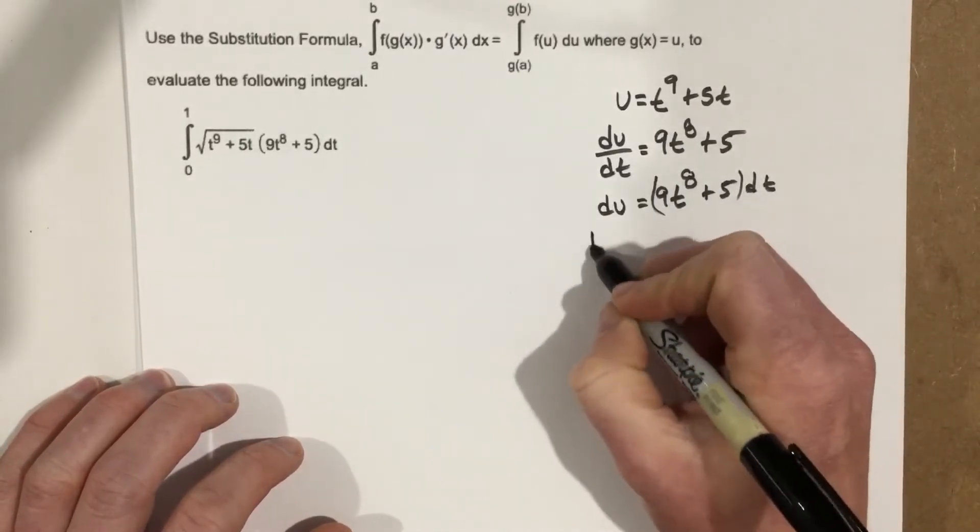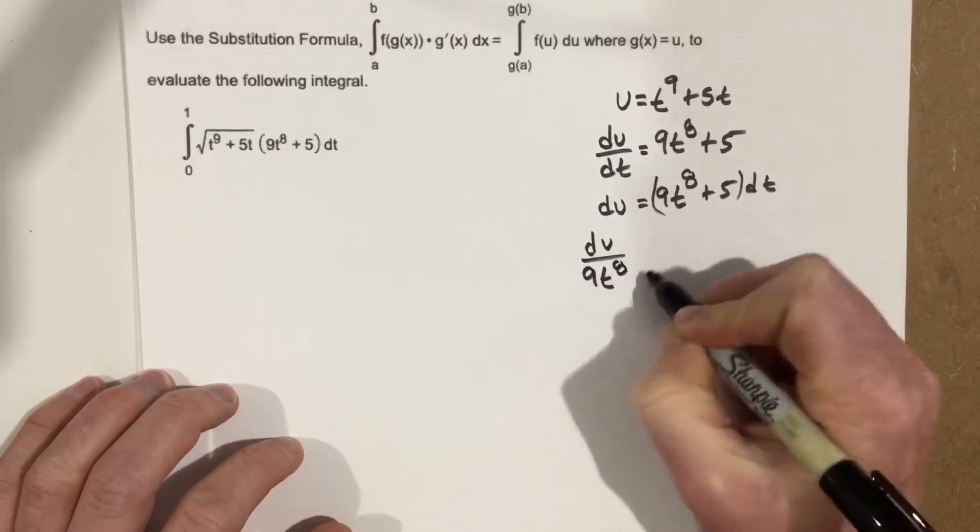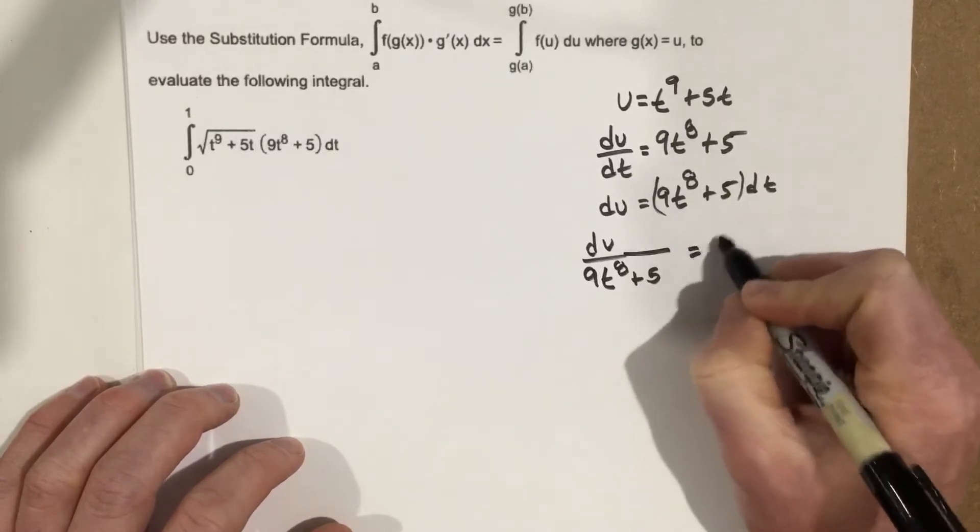And divide it across, you get du over 9t to the 8th plus 5. That would be equals dt.